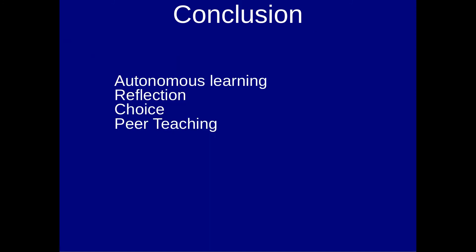In this video, we've talked about exactly what autonomous learning is — it is helping students and providing them the ability to become independent learners, to be able to go forward without us and to continue to grow. The three ways we discussed are reflection, choice, and peer teaching. I would like to thank you for watching this video. My name is Darren Thomas, the Director of Educational Research Techniques. Thank you.